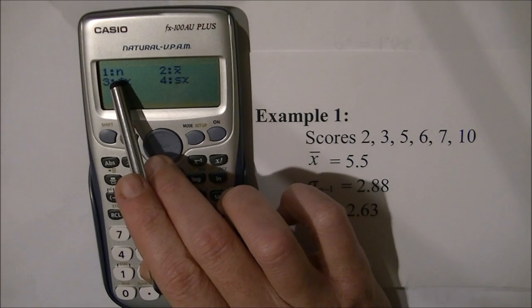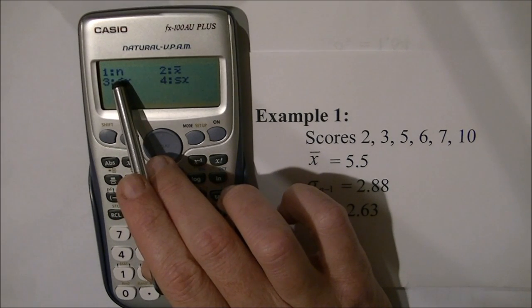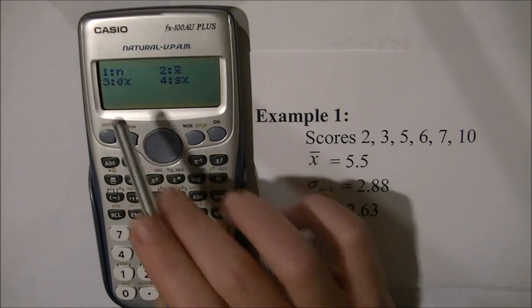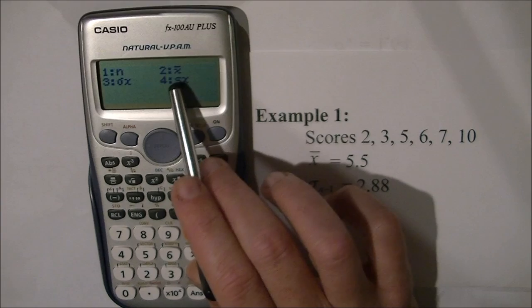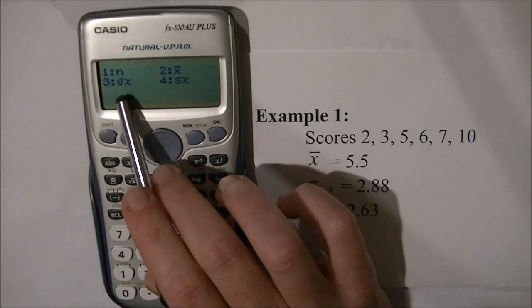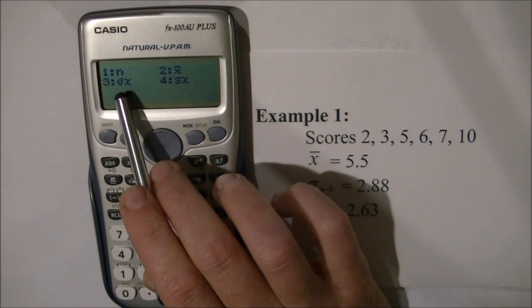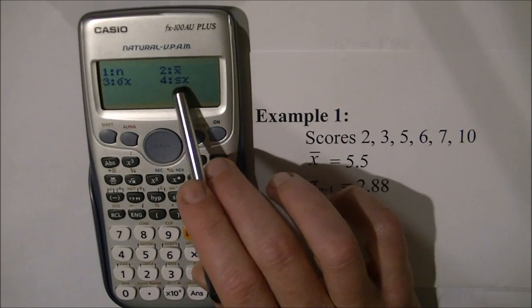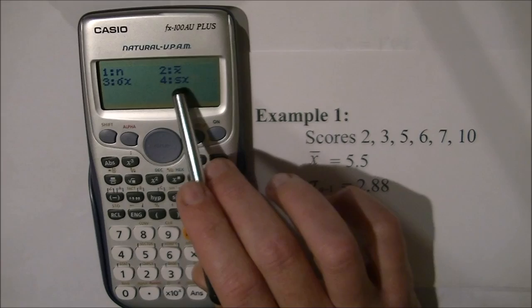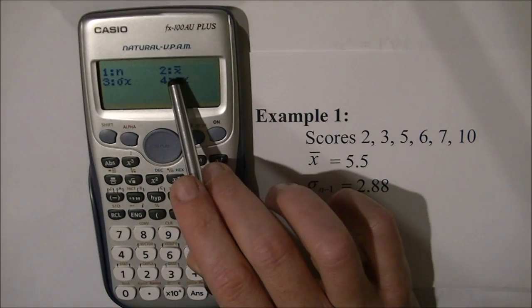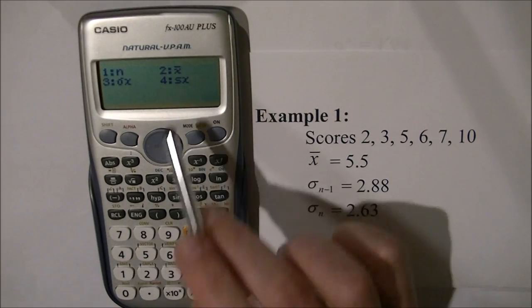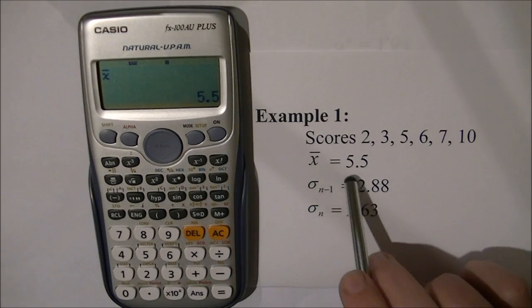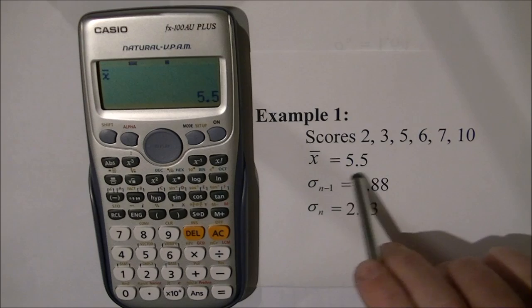In this menu, the options are 1, which is n (how many scores, in this case 6), 2, which is the average, 3, which is the standard deviation of the population, and 4, sx, which is the standard deviation of the sample. To find the mean, press 2, equals. The mean is 5.5.